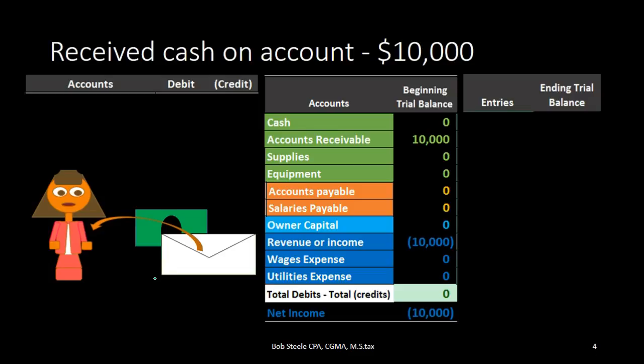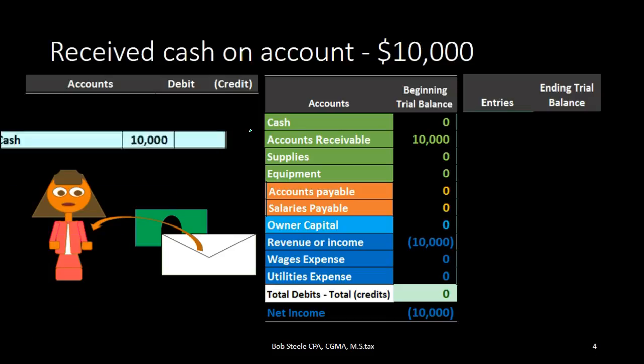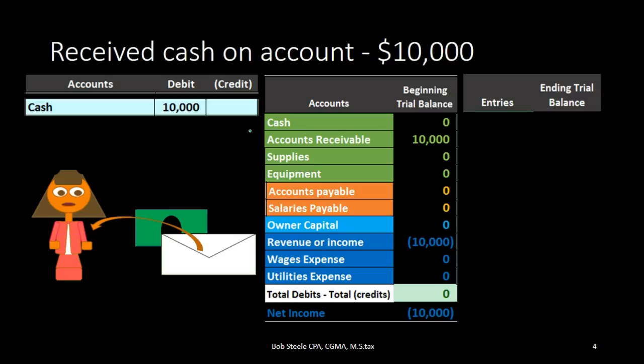First question: is cash affected? Of course it is in this case — we got cash in the mail. Cash has a balance, and we're going to do the same thing to it in order to make it go up, and therefore we're going to debit cash. So there's the debit to cash, and then we're going to have to credit something.